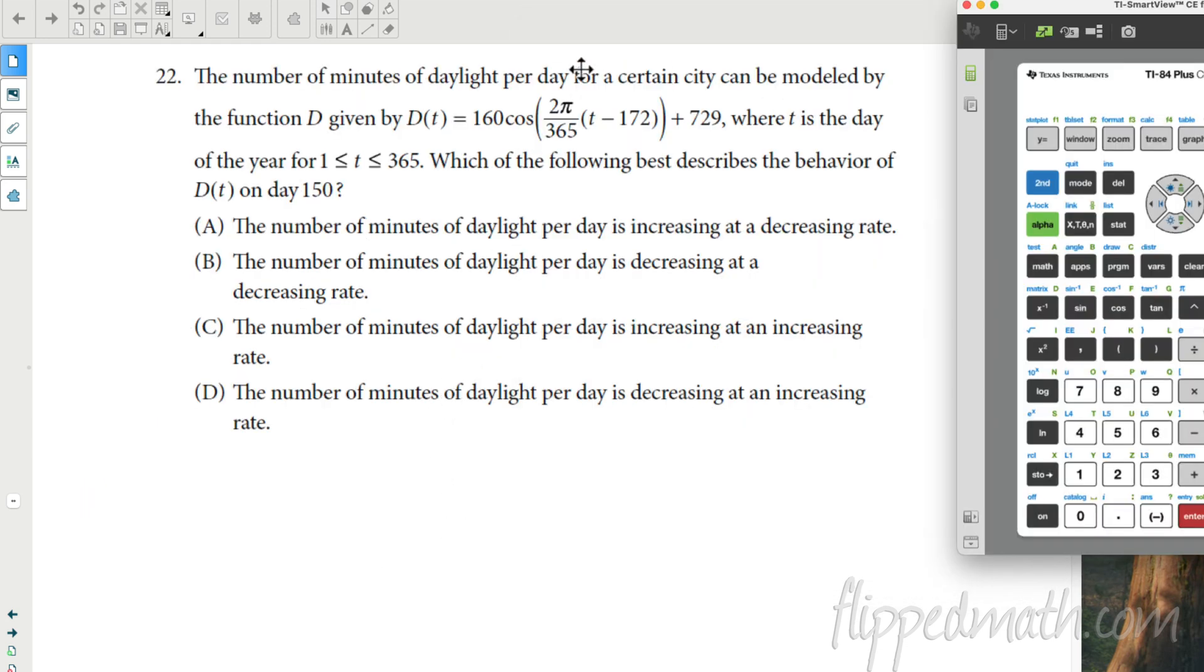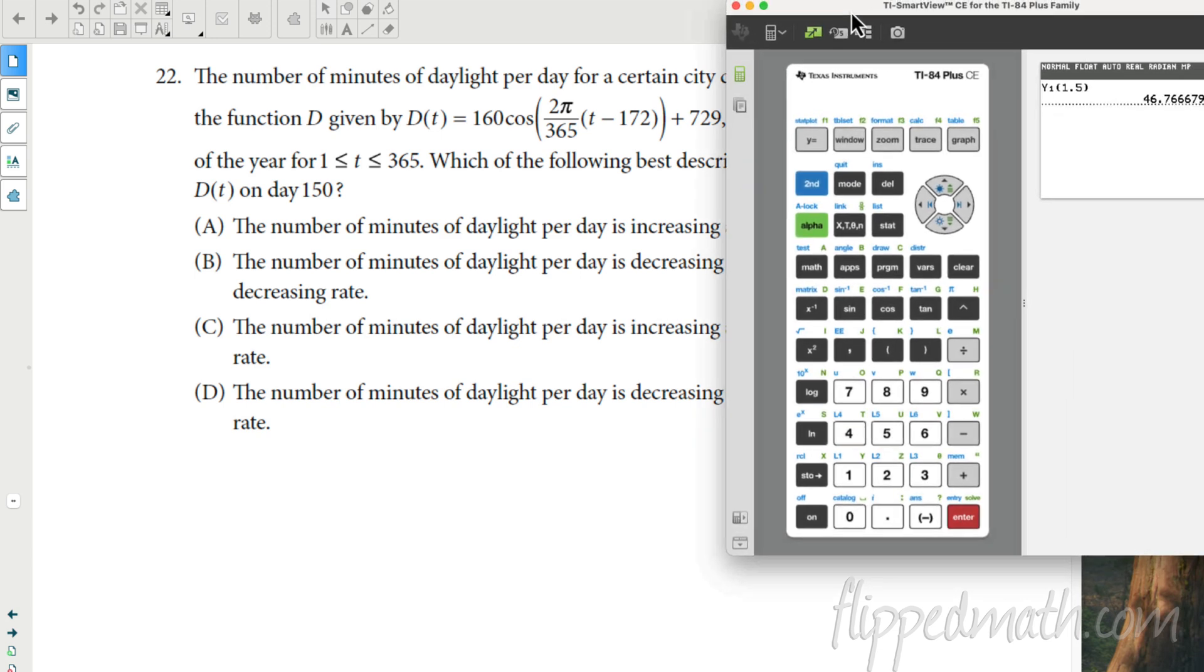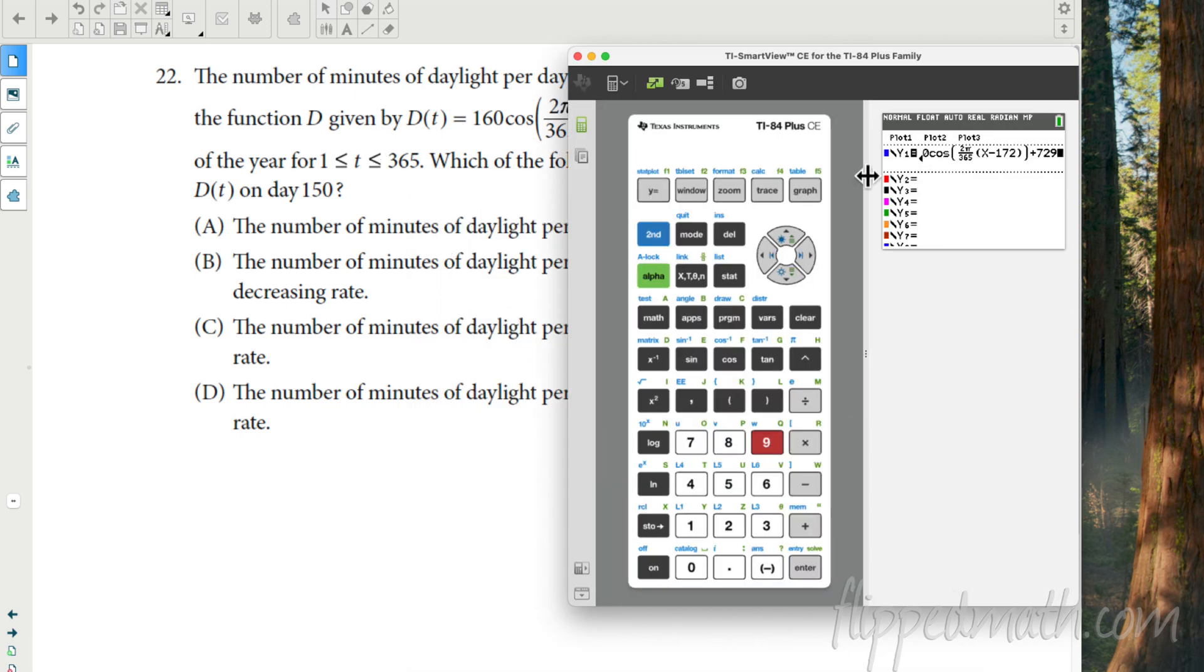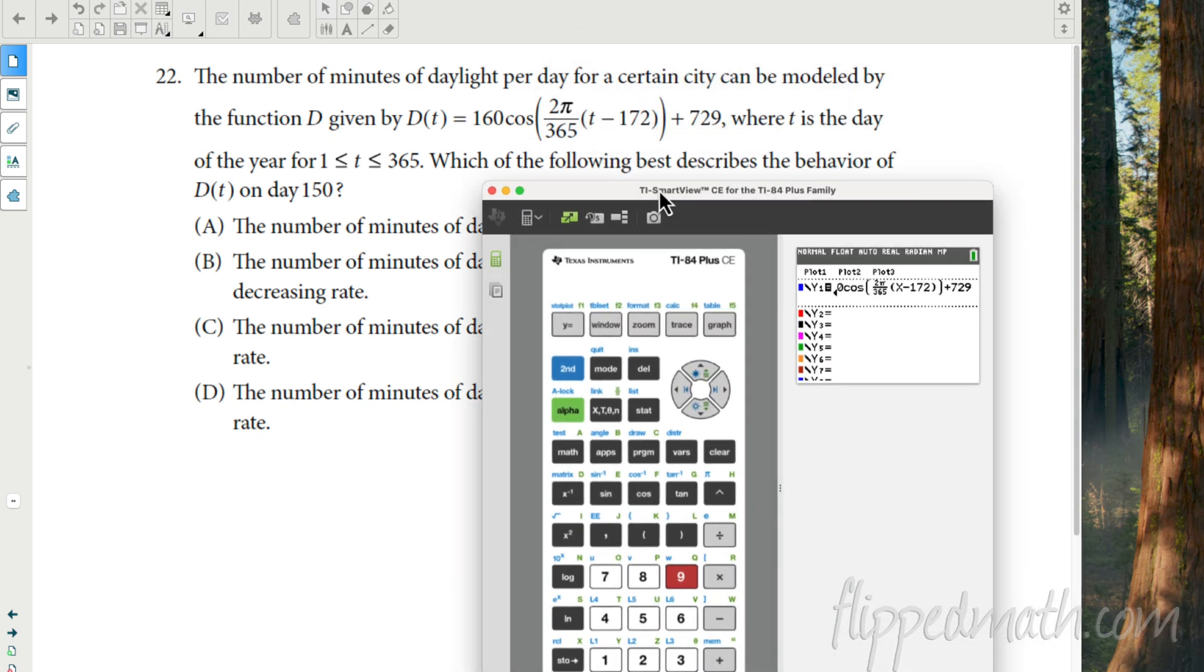Let's look at question 22. This one's a little bit different where they give us a trig function here. And they say, let's say it's the minutes of daylight. And they want to know if the number of minutes is increasing at a decreasing rate or decreasing at a decreasing rate or increasing at an increasing rate or decreasing at an increasing rate. This is a crazy question. Let's do this. Let's plug it into our calculator. I'm going to try a little trick, see if this works. Let's plug this in. We'll hit Y equals. I'm going to clear all this stuff out.